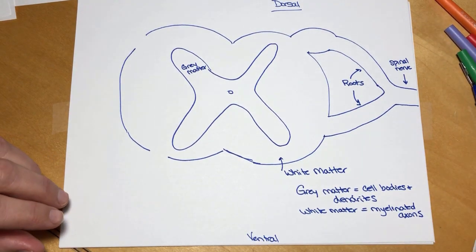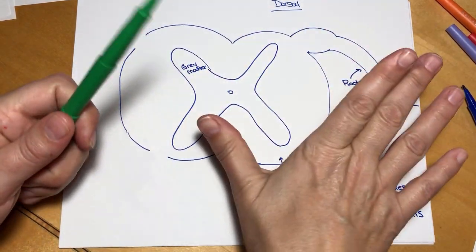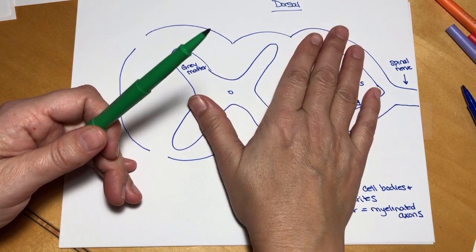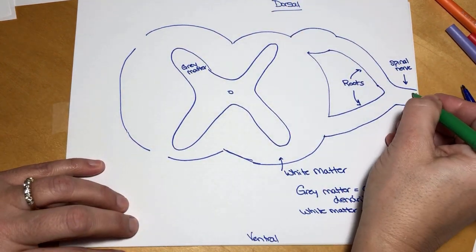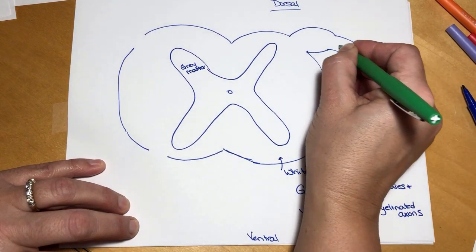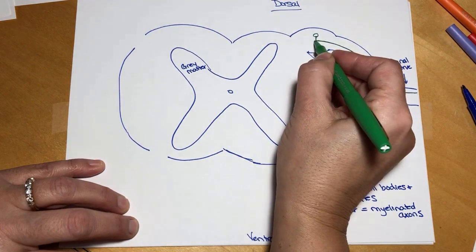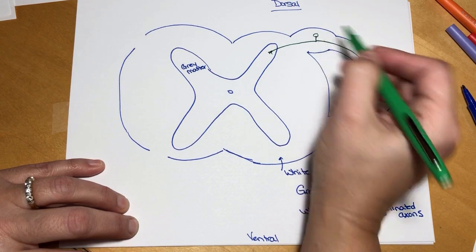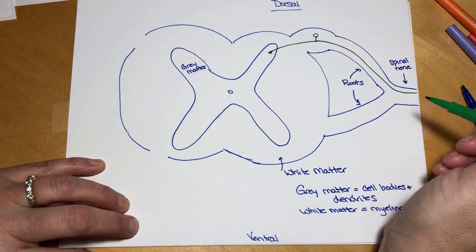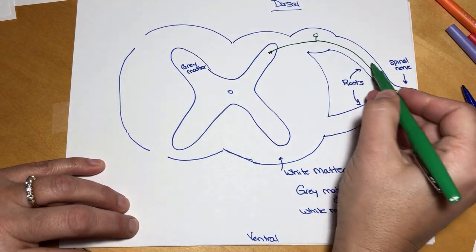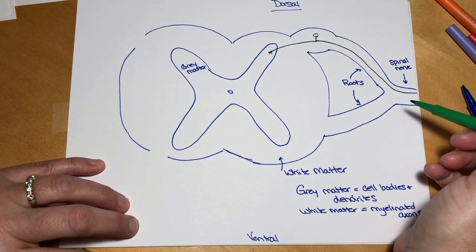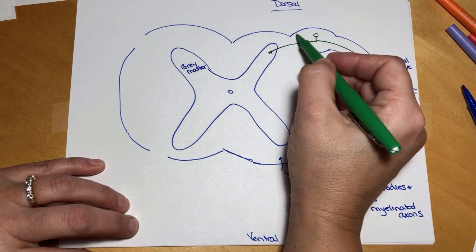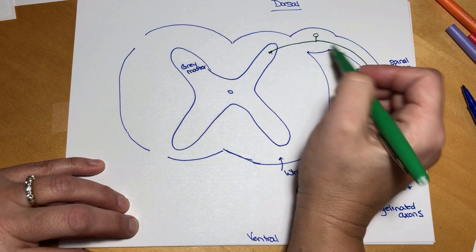If we have sensory information — I'm going to use green for sensory — your hand touches the desk. You can feel the desk, the temperature of the desk, how smooth it is, how hard it is. That information is going to be brought into the CNS on a unipolar neuron. That unipolar neuron has the cell body. White matter is myelinated axons, so this out here is white matter and this is a myelinated axon, but the cell body here is gray matter.